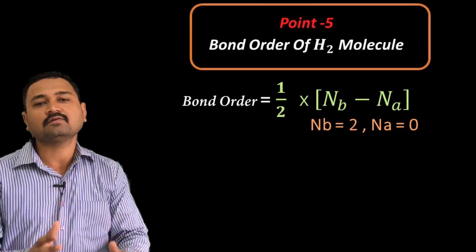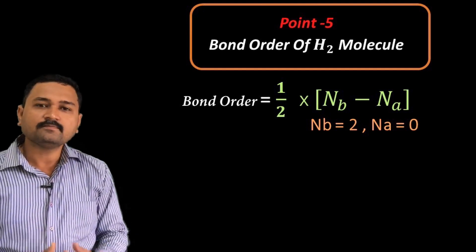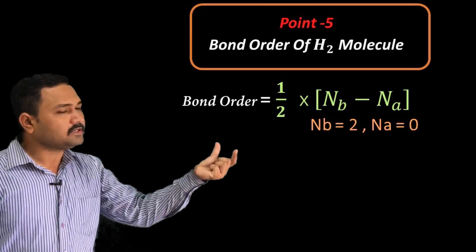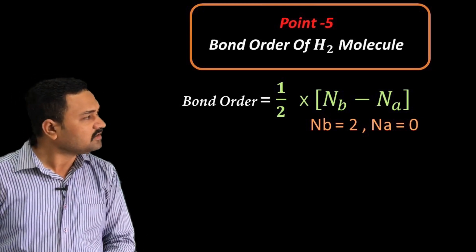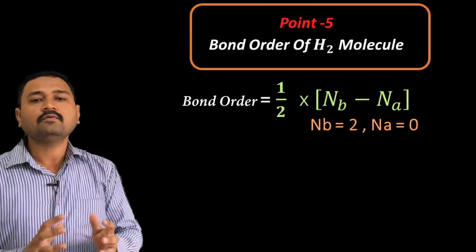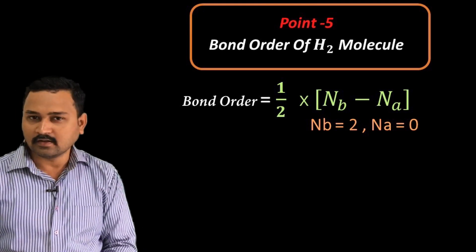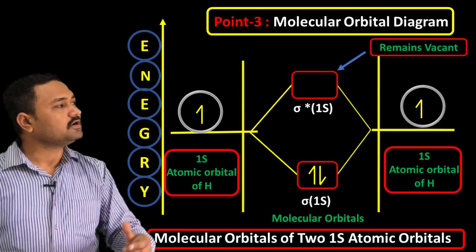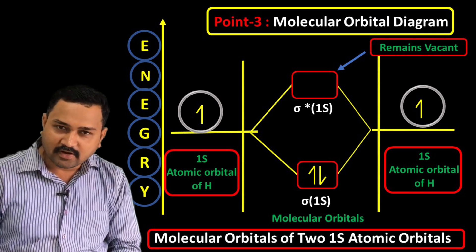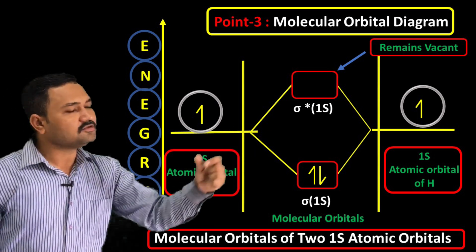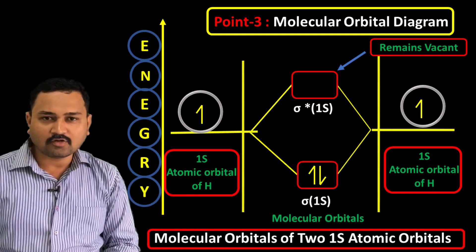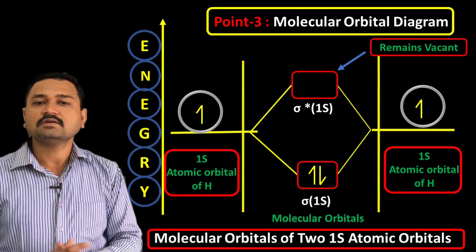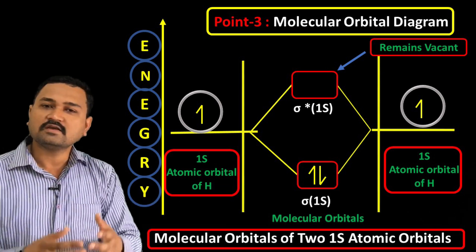Point number fifth: we are going to calculate the bond order. The bond order formula is 1/2 into (Nb minus Na), where Nb is the number of electrons in the bonding molecular orbital and Na is the number of electrons in the antibonding molecular orbital. Taking reference from point number third: sigma 1s is the bonding molecular orbital and sigma star 1s is the antibonding molecular orbital. Two electrons are in sigma 1s, so Nb equals 2. Sigma star 1s is vacant, so Na equals 0.